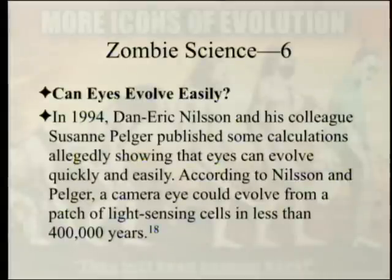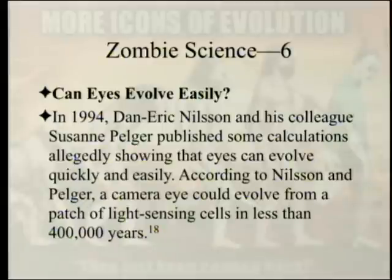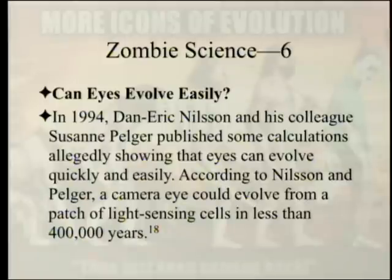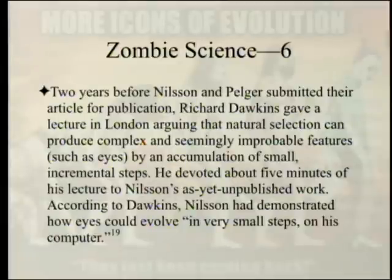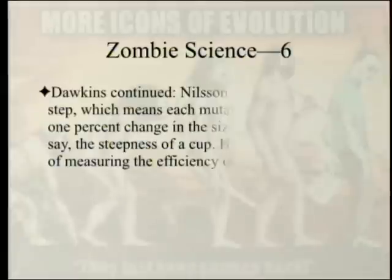Can eyes evolve easily? In 1994, Dan-Eric Nilsson and Susanne Pelger published calculations allegedly showing that a camera eye could evolve from a patch of light-sensing cells in less than 400,000 years — but they touched only the main structural parts of the eye and left out all the important details, like the retina. Two years before their article was published, Richard Dawkins gave a lecture arguing that natural selection can produce complex features like eyes through accumulation of small incremental steps, devoting about five minutes to Nilsson's as-yet unpublished work. According to Dawkins, Nilsson had demonstrated on his computer how eyes could evolve in very small steps.